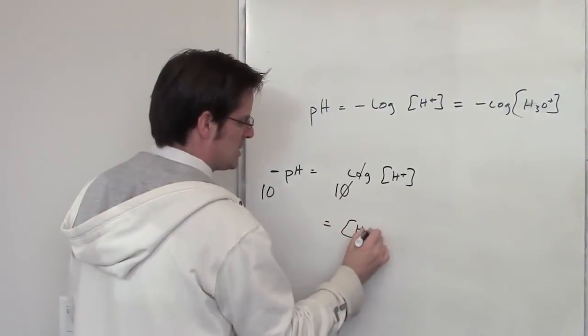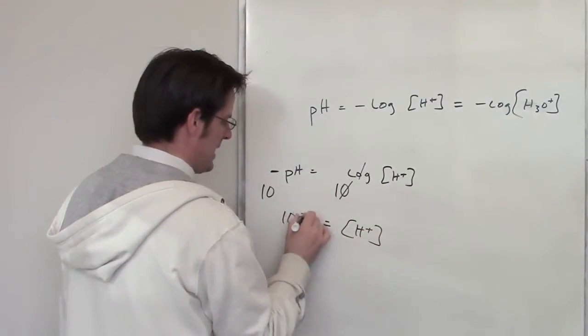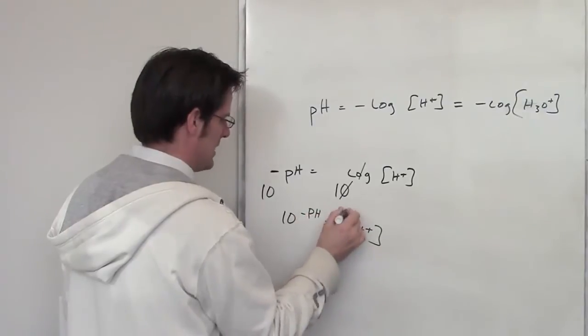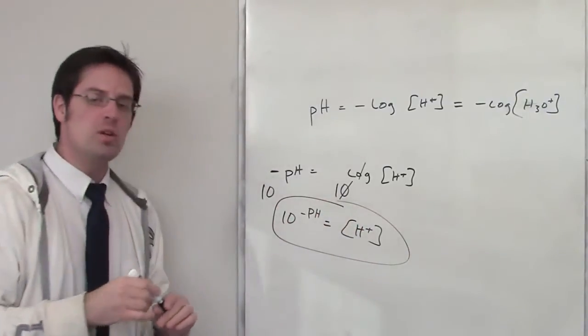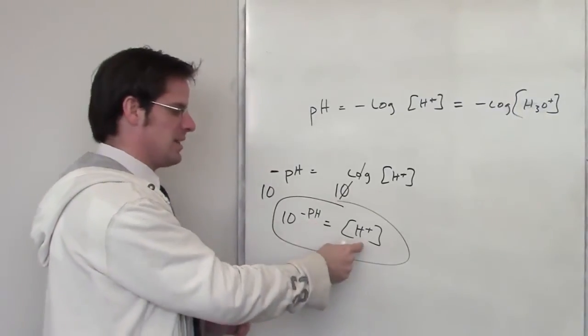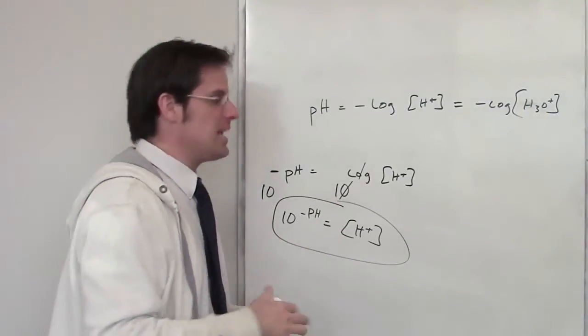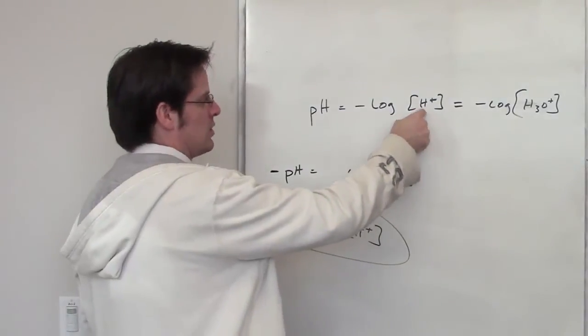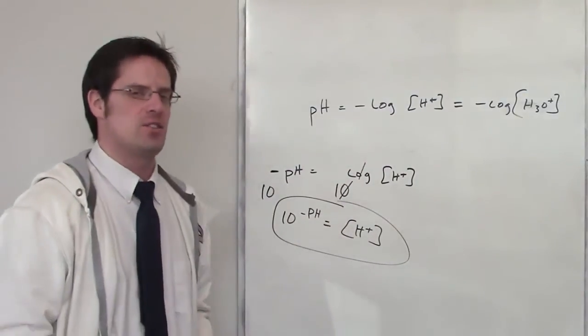That leaves then H+ concentration being equal to 10 raised to the negative pH. That's a beautiful mathematical expression because if you know the pH, you can calculate the concentration of H+. And conversely, if you know the concentration of H+, you can use it to calculate the pH.